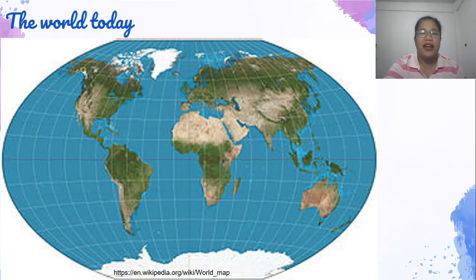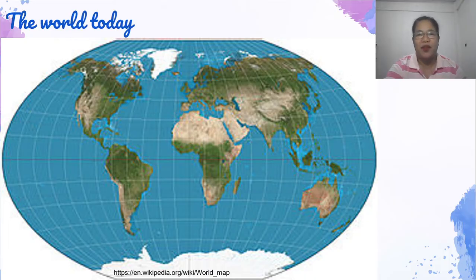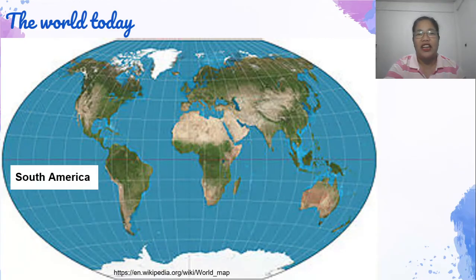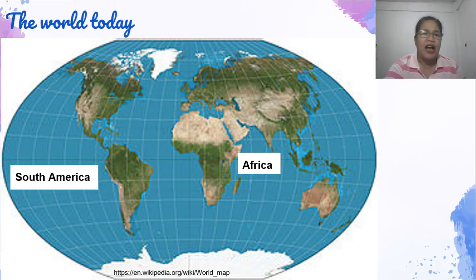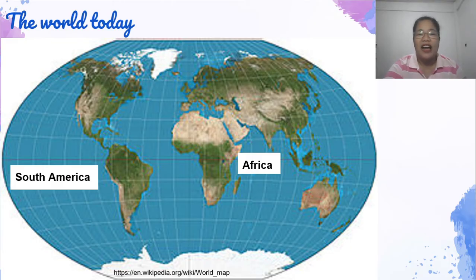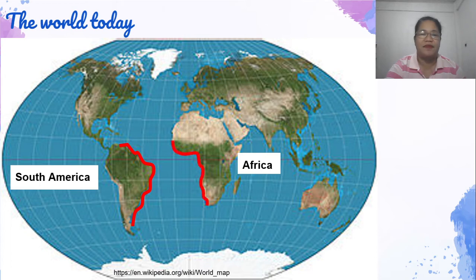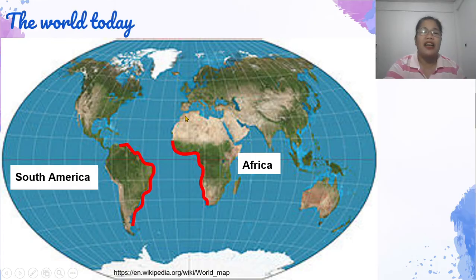Ito ay isang halimbawa ng mapa ng mundo. And it shows us the world as it looks today. Obserbahan natin ang mapang ito. Narito ang kalupaan o kontinente ng South America. Ito naman ang kontinente ng Africa. Napansin mo ba na ang gilid ng South America ay katugmang-katugma ng gilid ng kontinente ng Africa? Ang mga gilid ng North America ay katugma rin ng gilid ng kontinente ng Europa, or Europe.